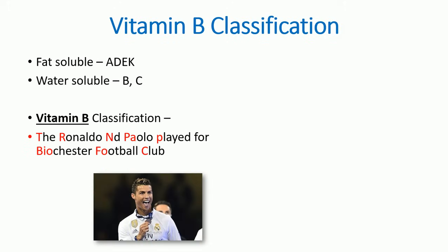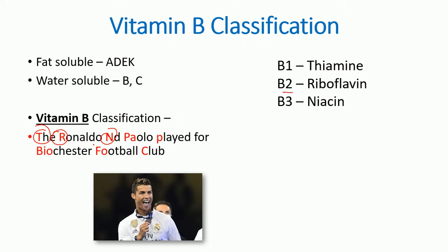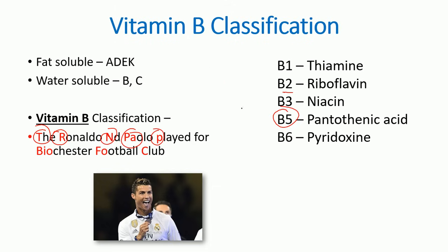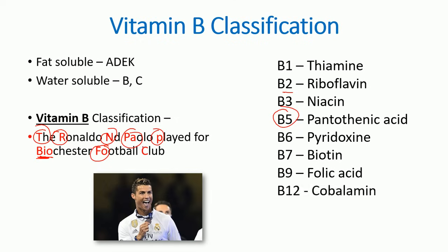The mnemonic is: 'Ronaldo and Paolo played for Bichester Football Club' — Bichester is a fictional club. The red highlighted letters map to vitamin B subclasses: Th = thiamine (B1), R = riboflavin (B2), N = niacin (B3), Pa = pantothenic acid (B5), P = pyridoxin (B6), Bio = biotin (B7), Fo = folic acid (B9), and C = cobalamin (B12).